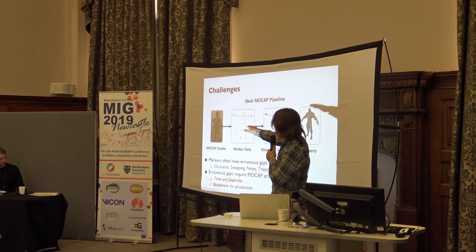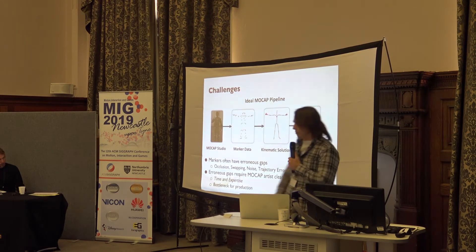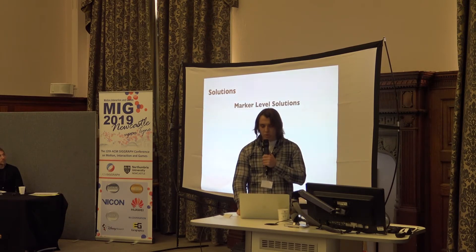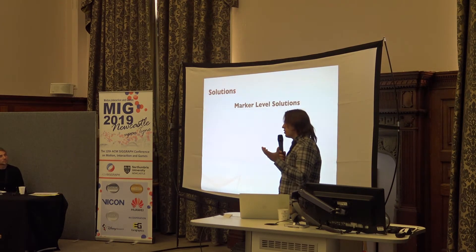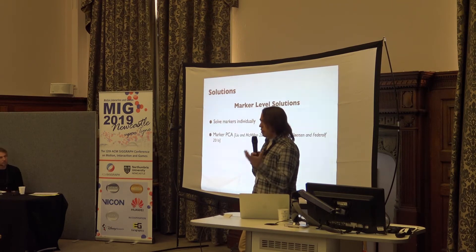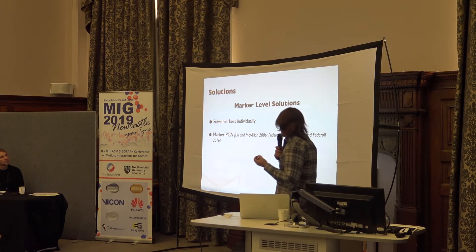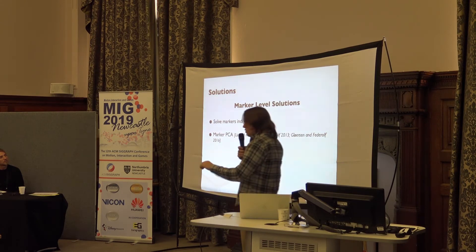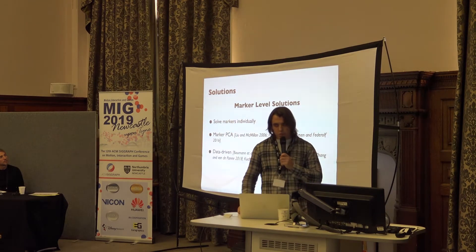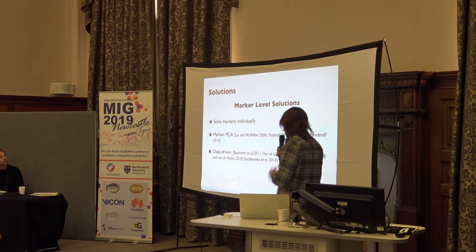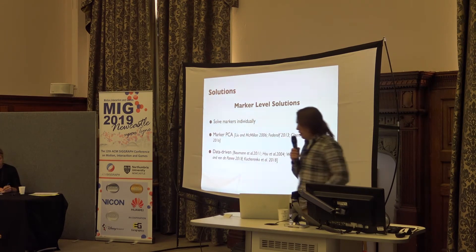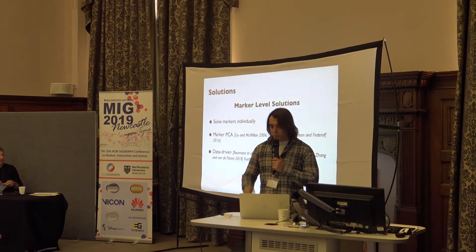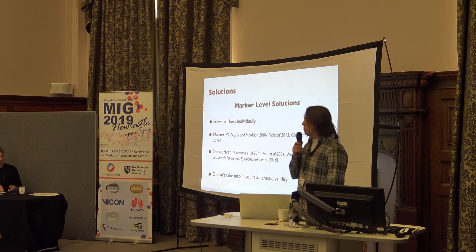Ideally we have something where everything goes smoothly and your motion transfers seamlessly through delivery. There are a couple categories of solutions. One category I call marker-level solutions, where we deal with the problem on a marker-per-marker basis — we look at the animation markers and solve them individually. There's been a lot of work on this, including marker PCA methods which do principal component analysis, and many data-driven methods ranging from classical approaches to deep learning. But the main issue is they don't take into account the kinematic validity of your data.